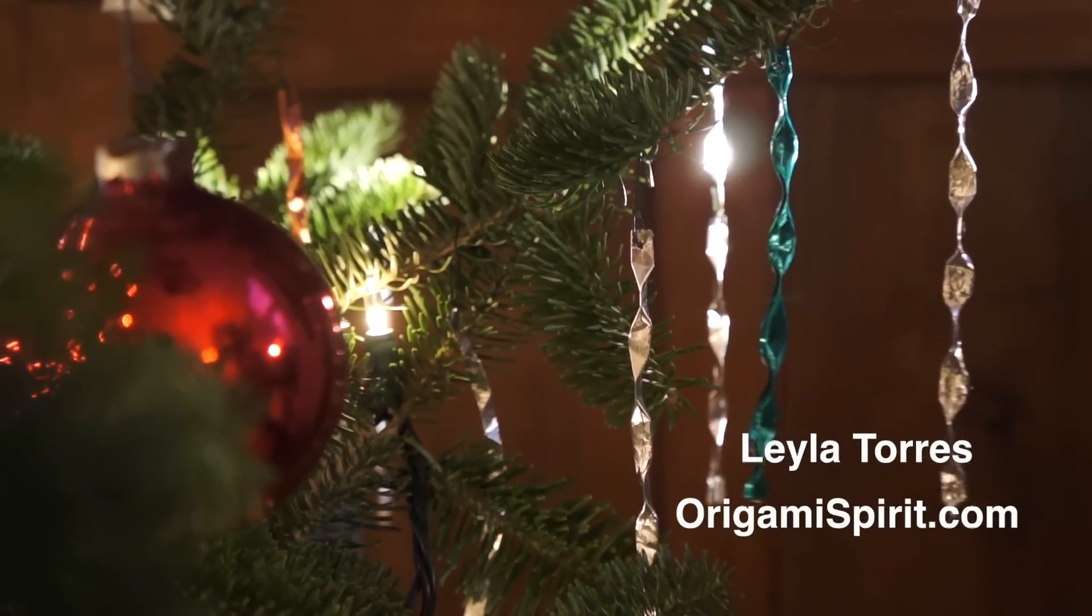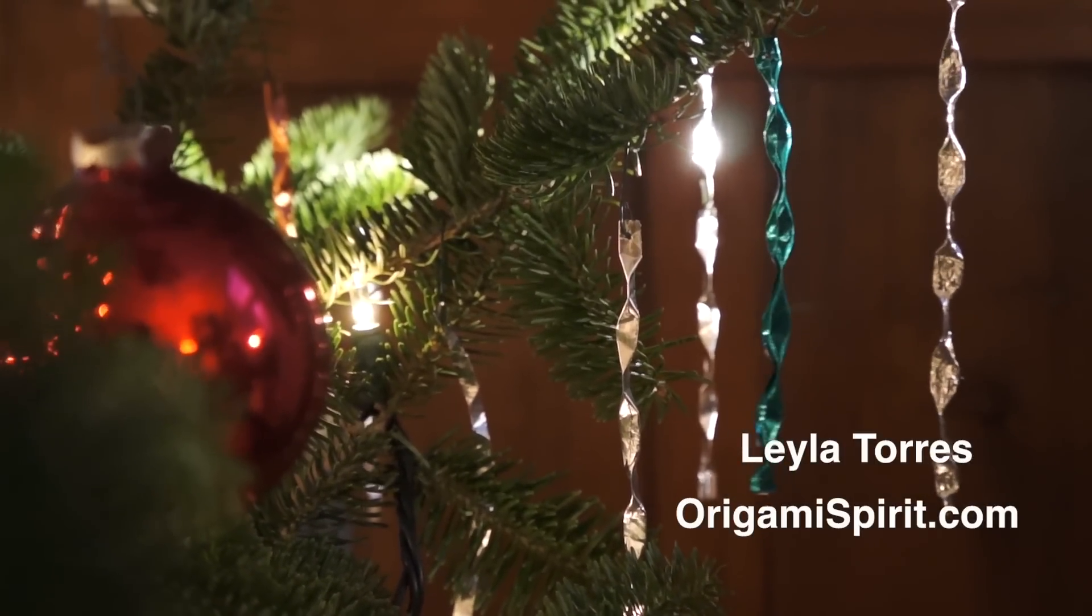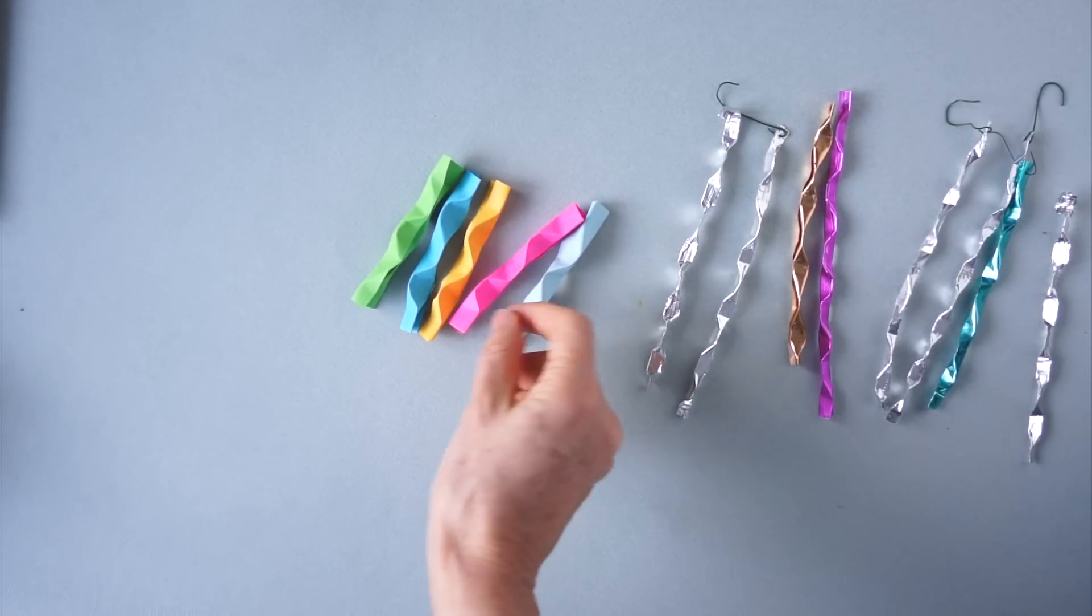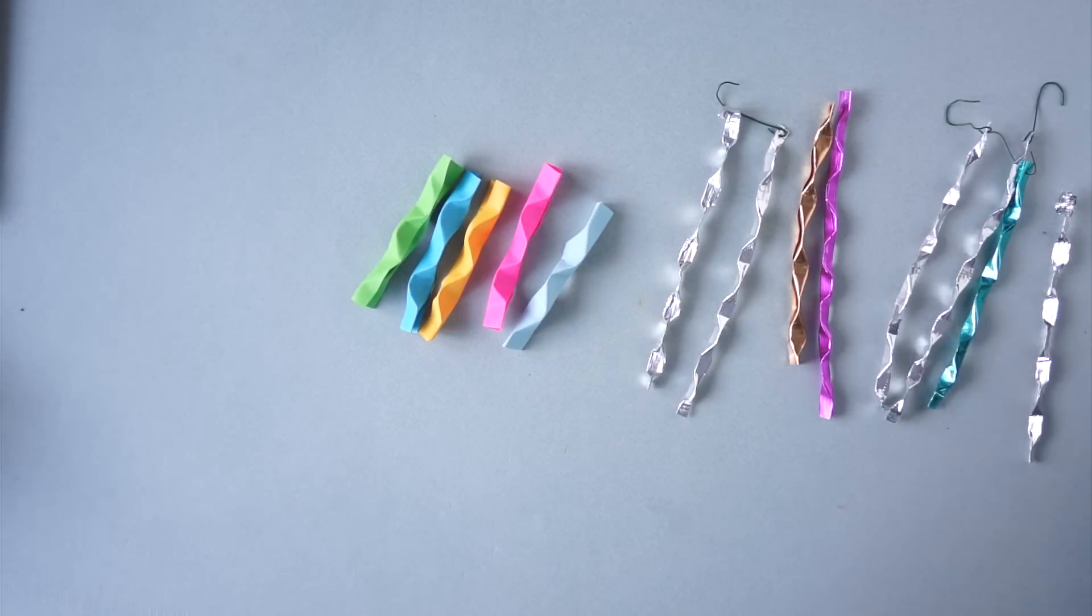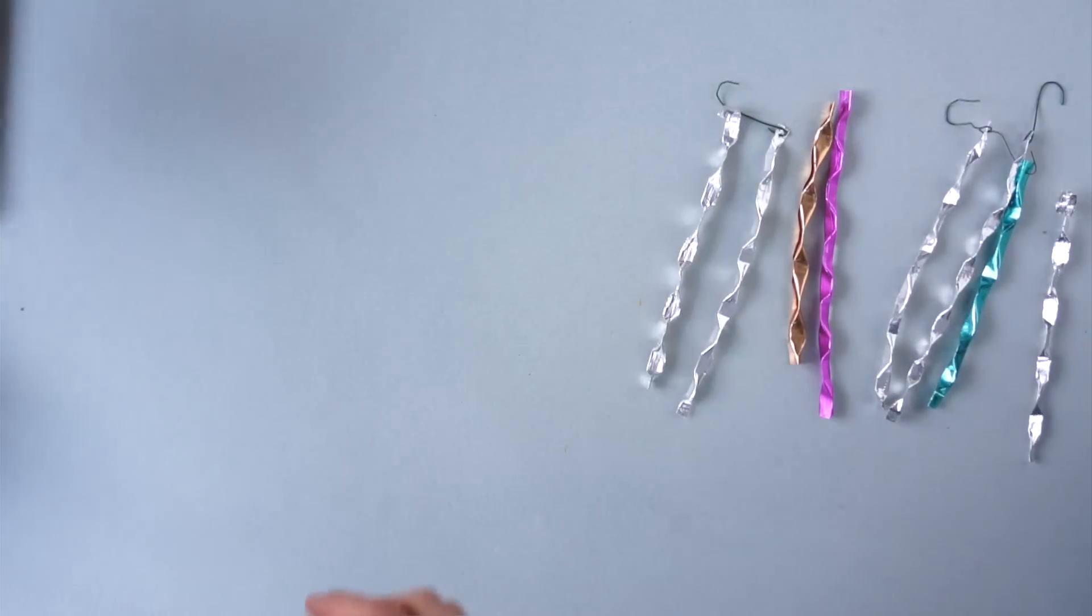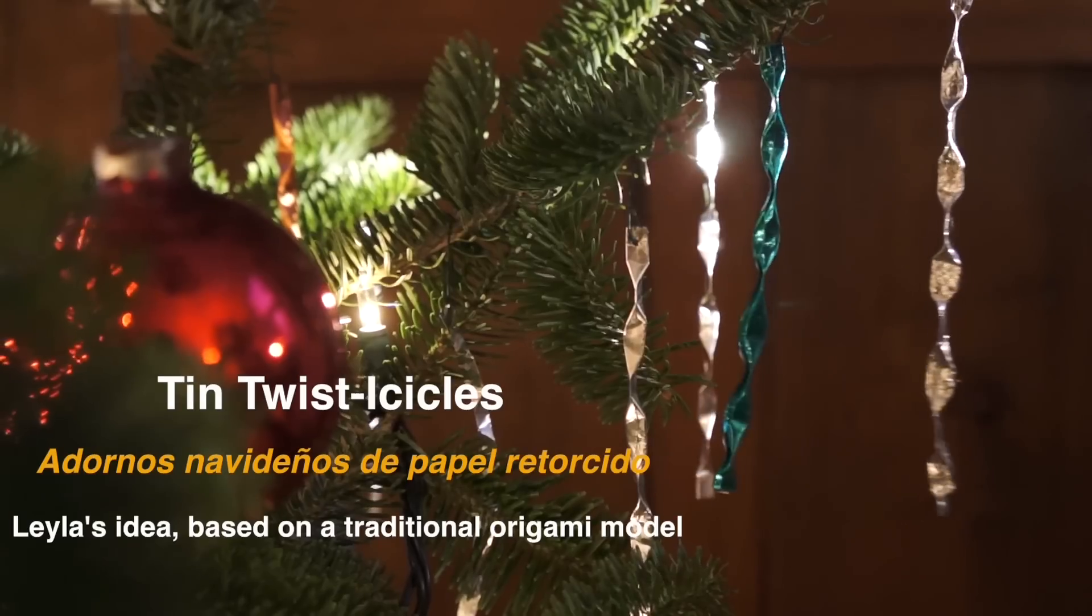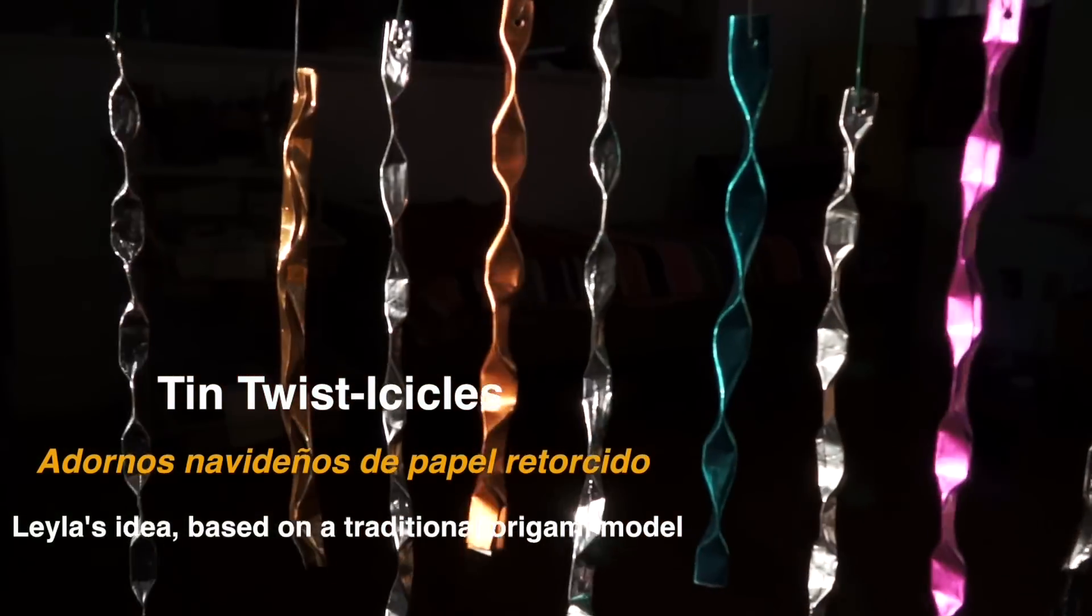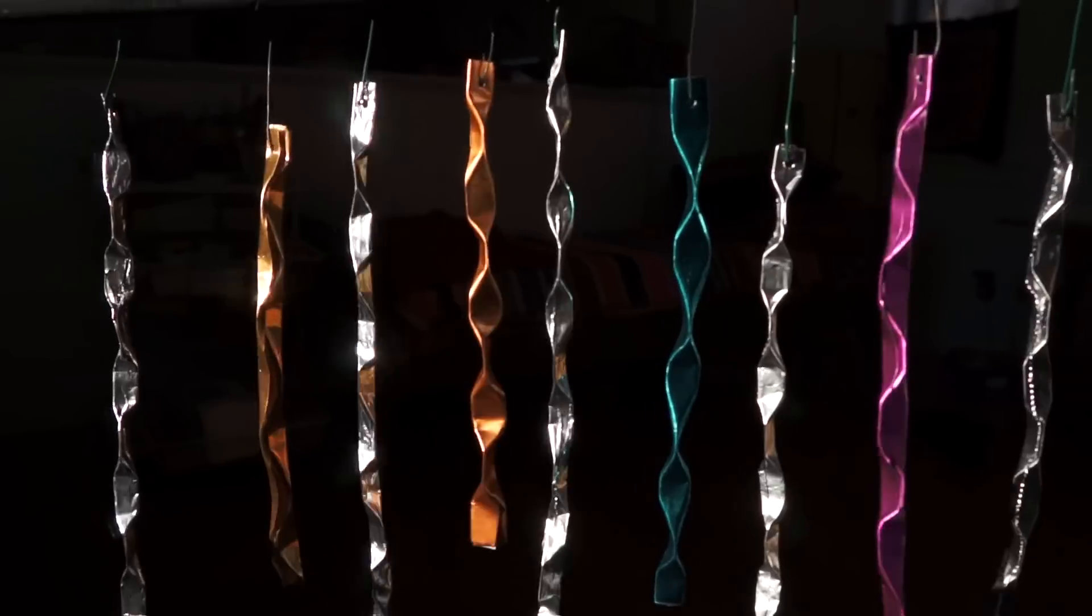This is Leila Torres of OrigamiSpirit.com. In a previous video we learned how to make these paper sticks to use for secret love notes or for fortune messages. We will take this same idea to make Victorian style tin twist icicles. They look great as Christmas decorations.